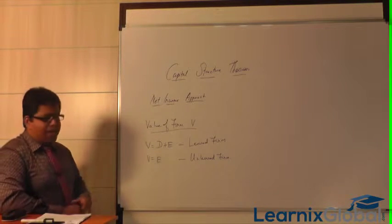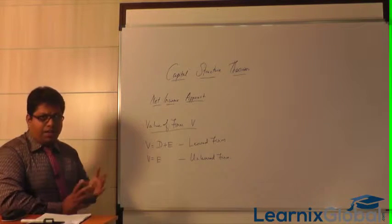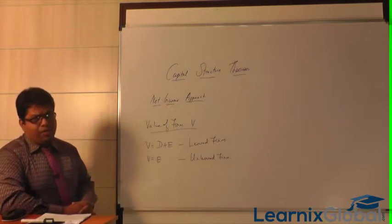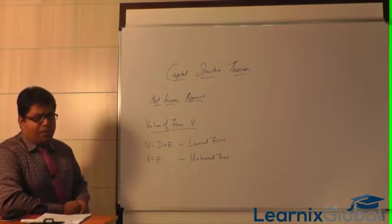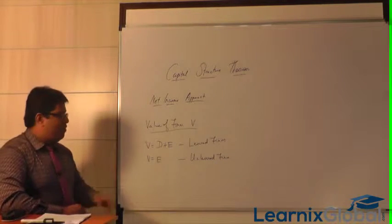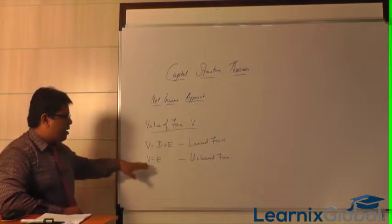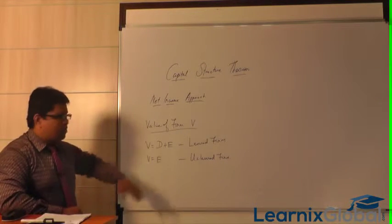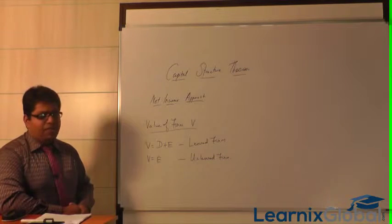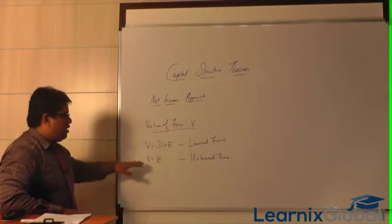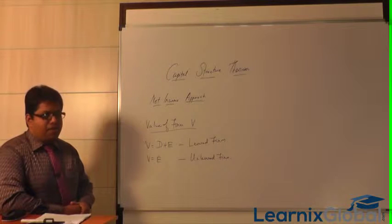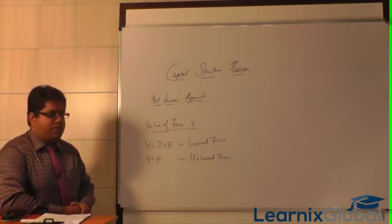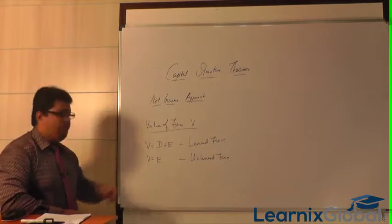In the Net Income Approach, we calculate the market value of the firm. For a levered firm, this is found by adding the market value of debts and market value of equities. For an unlevered firm, it is obtained by calculating only the market value of equities.